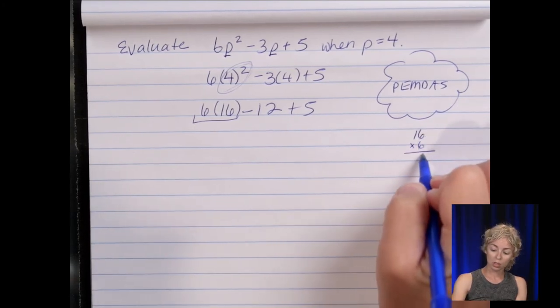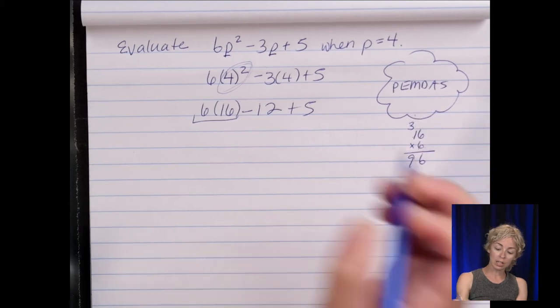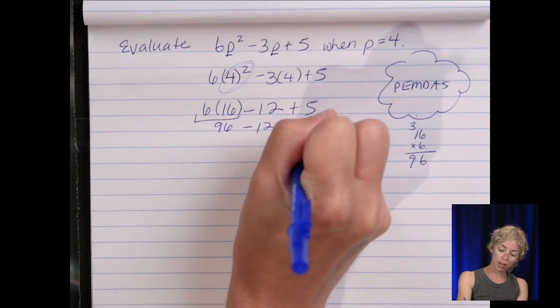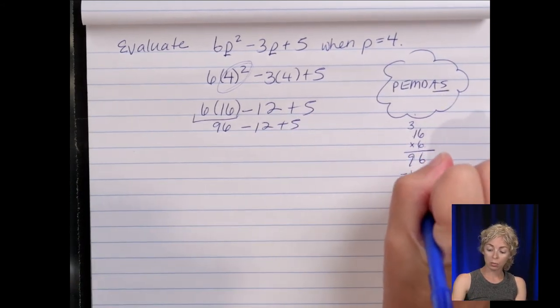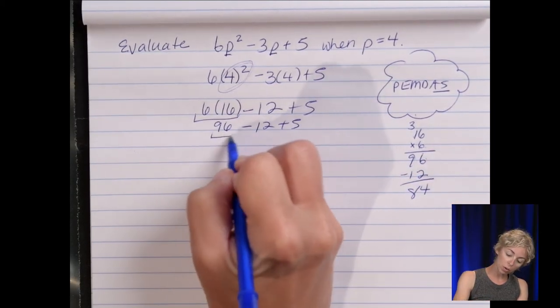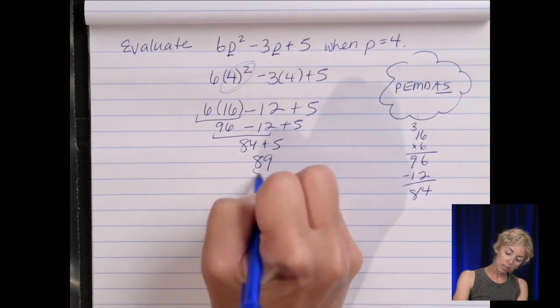Minus twelve plus five. Now addition and subtraction we do in order of left to right. So if you want to still by hand subtract twelve six minus two four nine minus one eight so this is eighty-four last plus five is eighty-nine.